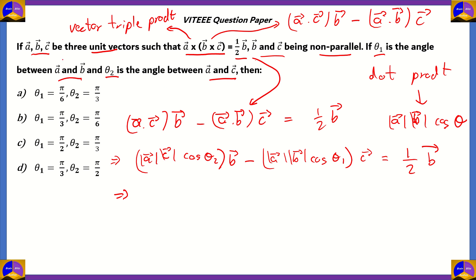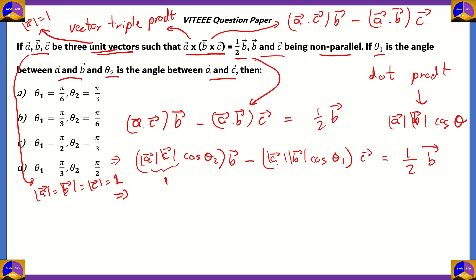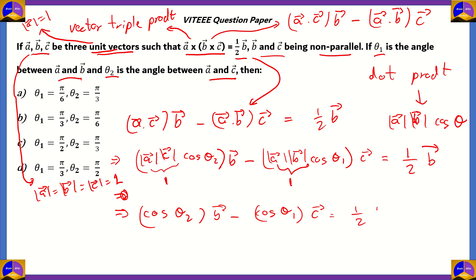Now, since A, B, and C are unit vectors, modulus of A equals modulus of B equals modulus of C equals 1. Applying those values, |A| times |C| gives 1, and |A| times |B| also gives 1. So the equation simplifies to: cos(theta2) times B-bar minus cos(theta1) times C-bar equals half B-bar.